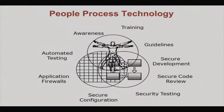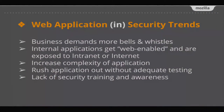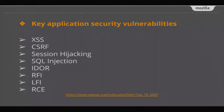The people, process, and technology framework matters. If we raise awareness, do training, provide guidance, write secure code, do code review, perform security testing, configuration checks, and automated testing — then maybe our systems can be 95% secure. I'm not saying 100%, but 95% is achievable if you follow this process.